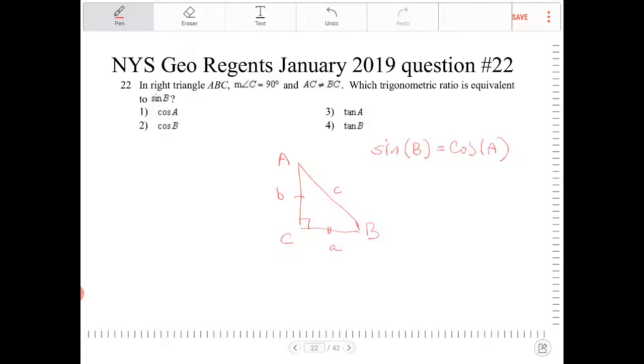So let's work this out. Sine of B is equivalent to lowercase b over capital C, opposite over hypotenuse.